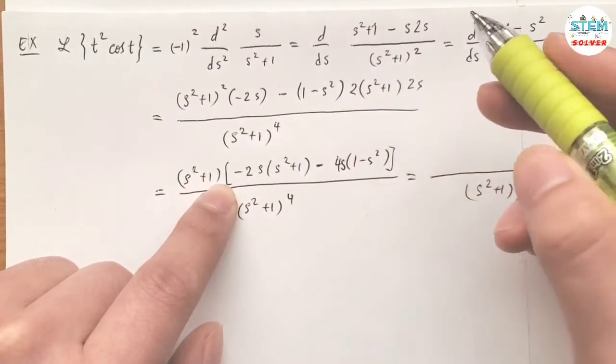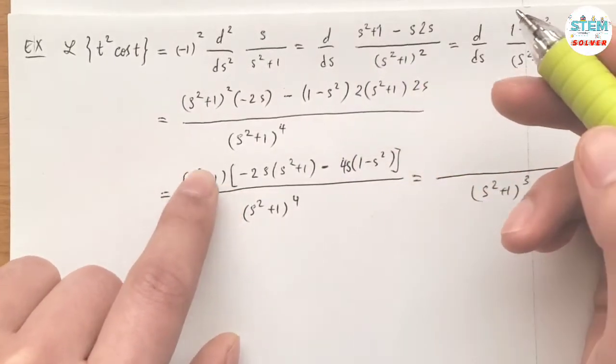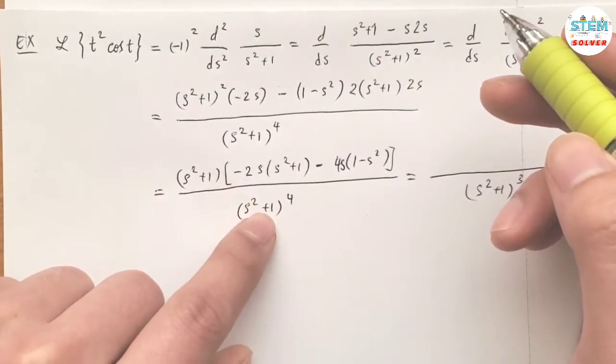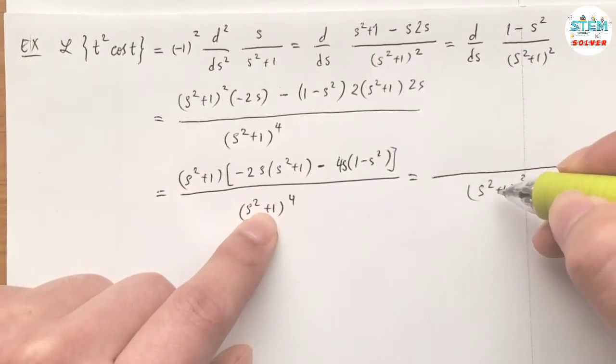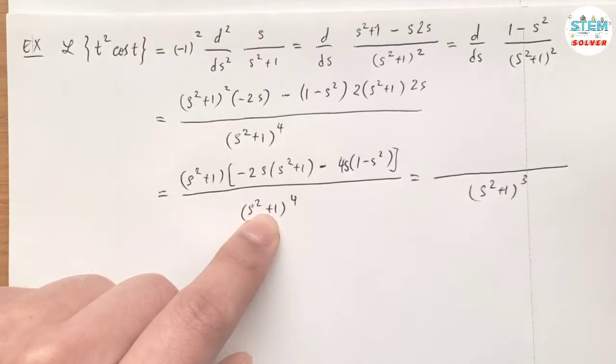This (s²+1) cancels with one on the bottom, leaving us (s²+1)² on the bottom and simplifying the top.